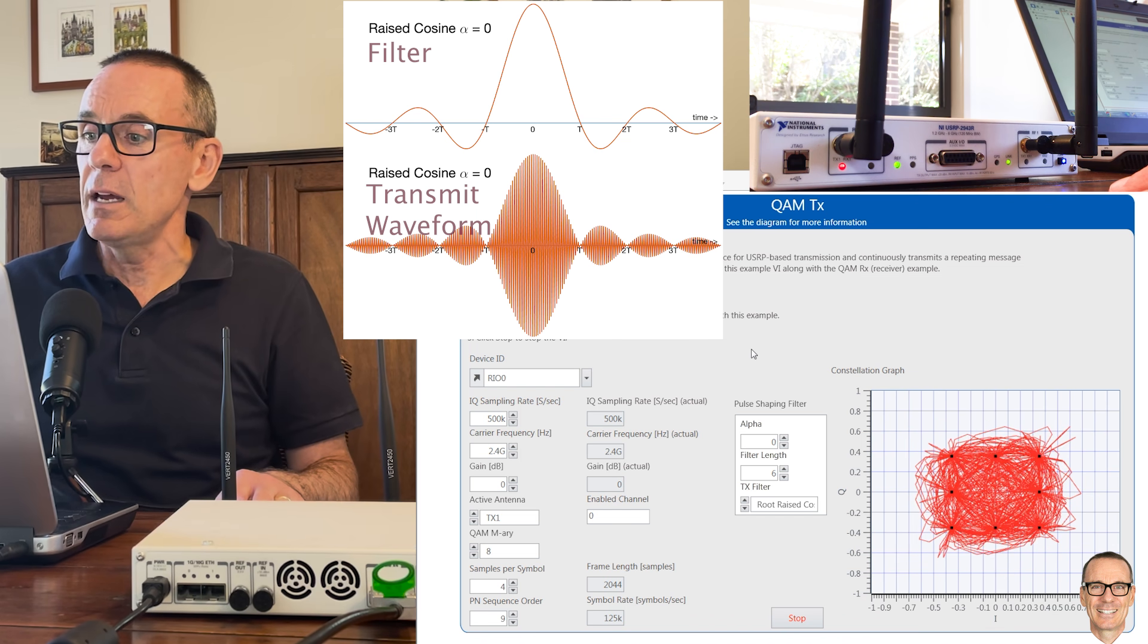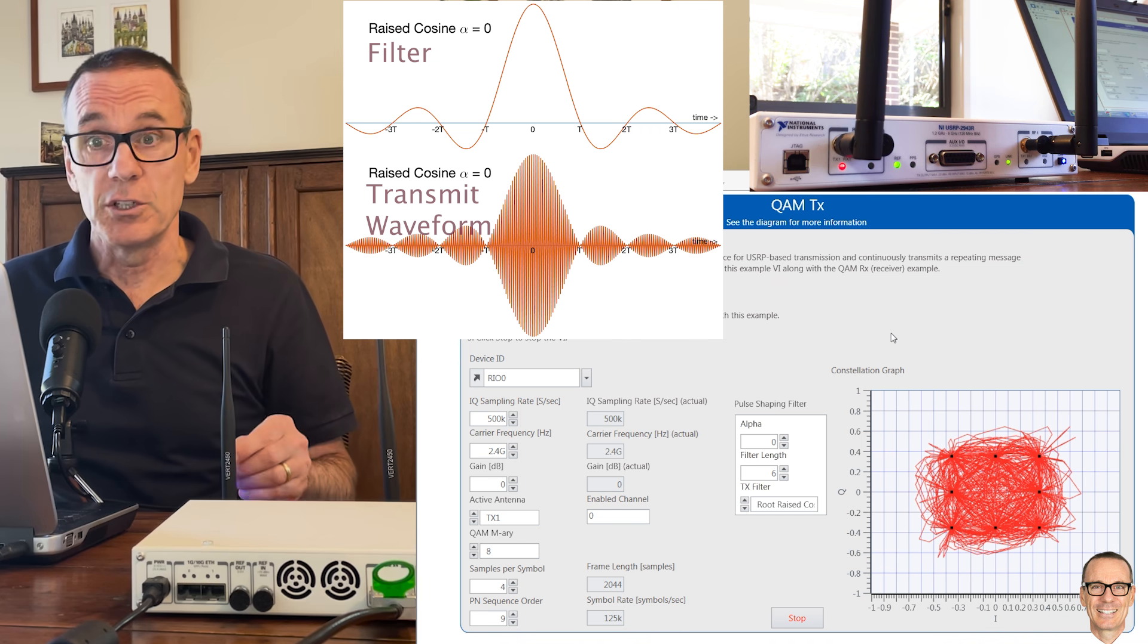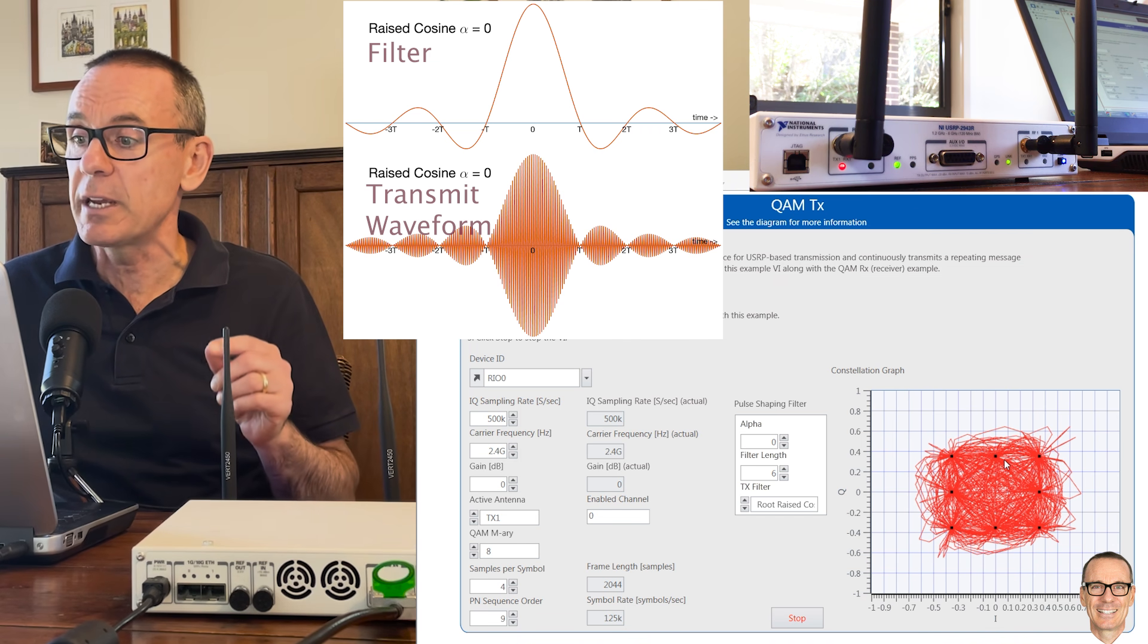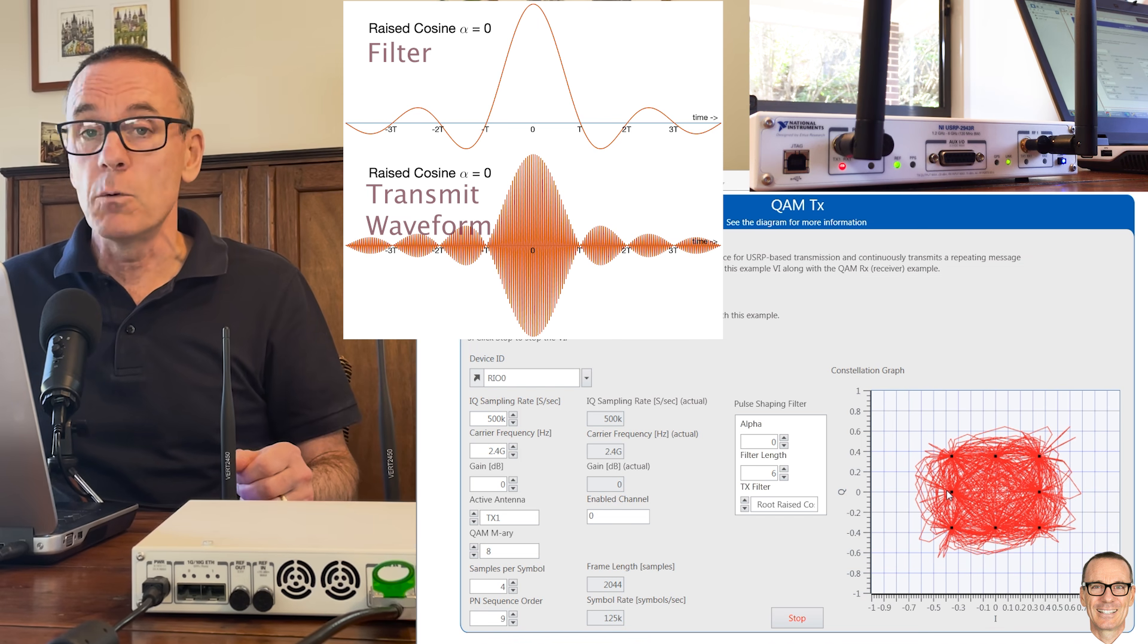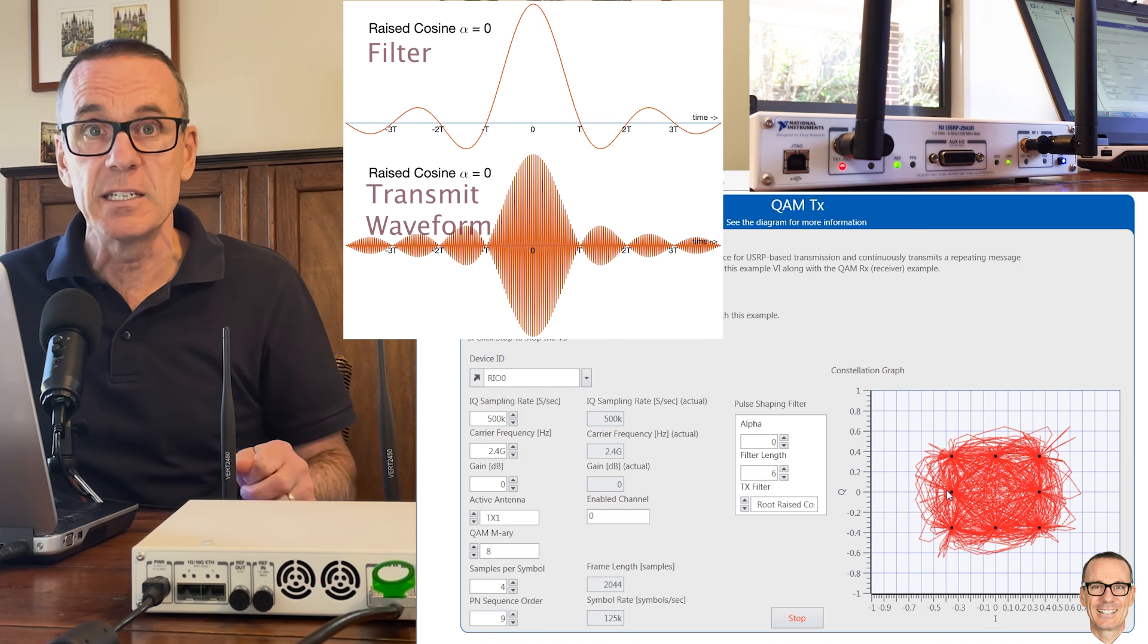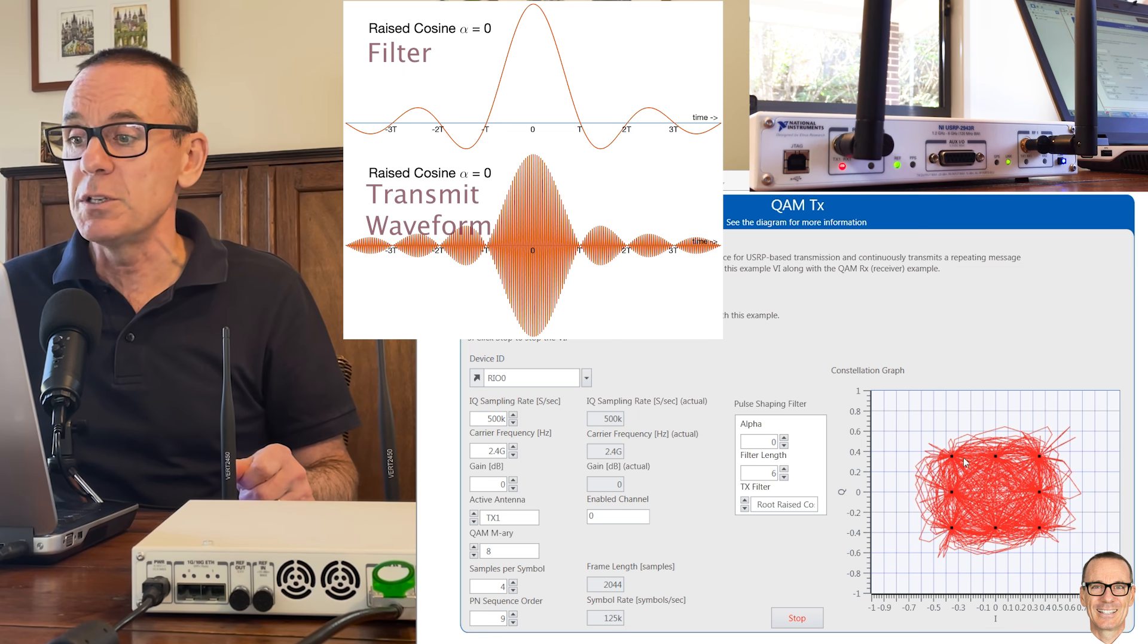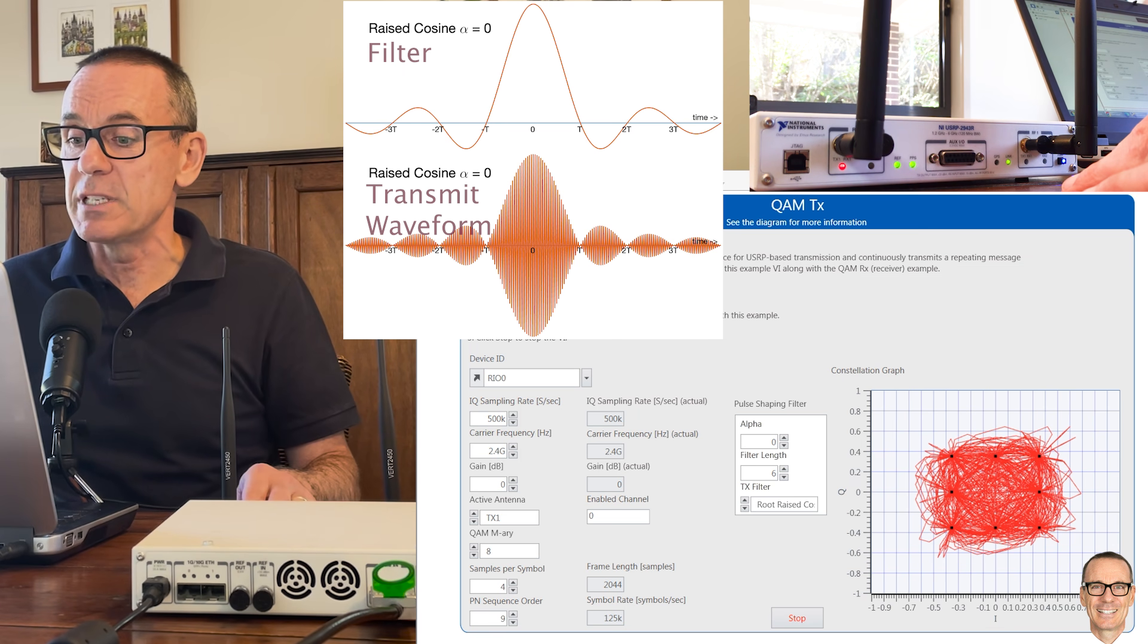And we can see here that we've now got a different constellation diagram. The points are still located at the locations where you would expect 8QAM points to be but now the waveform is traveling around a lot of phases and amplitudes between those sampling times. So let's have a look at what's going on at the receiver now.